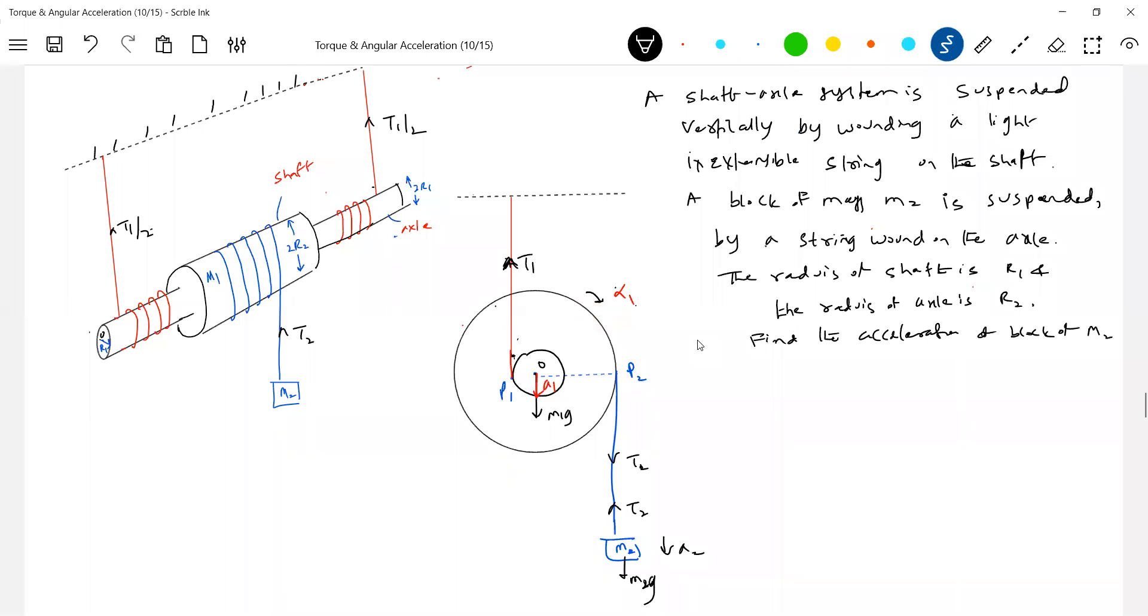First, T2 minus M2G, acceleration of the block. And then, what about the torque? It will rotate about O only. It will rotate about O. So, I'll do one thing. I'll write alpha naught. So, T1 into R1 plus T2 into R2. The radius is R1, R2. Both will set up clockwise torque, no? Should be equal to I0 alpha naught. Moment of inertia of this, let it be I naught. You cannot write that of cylinder.